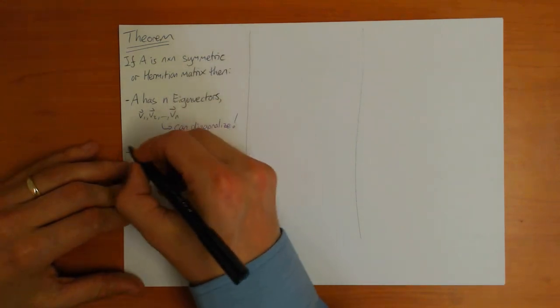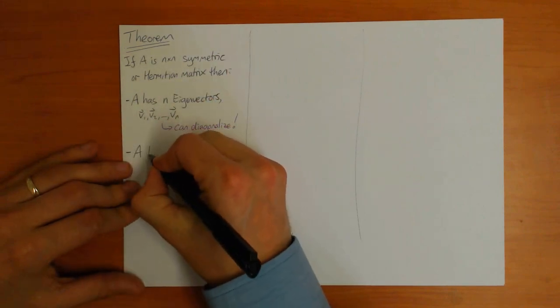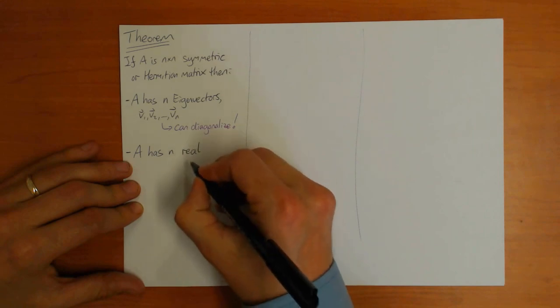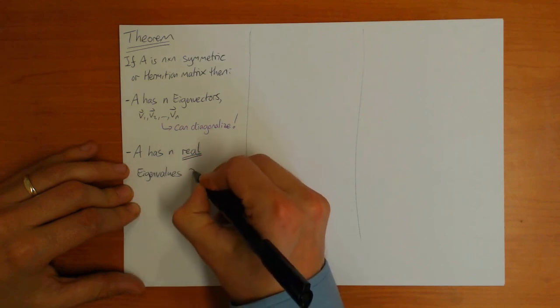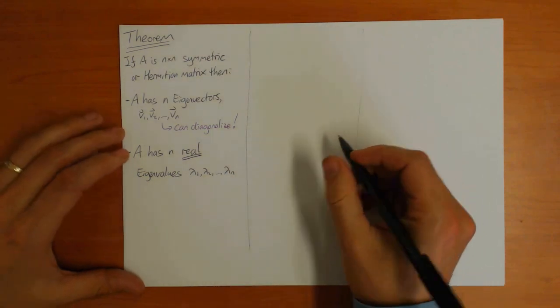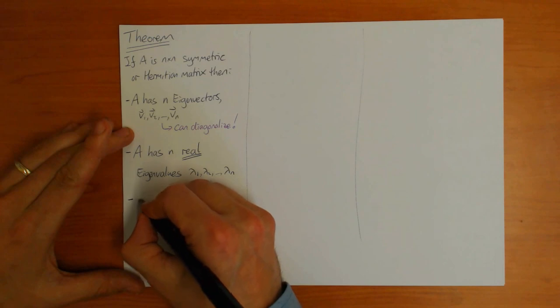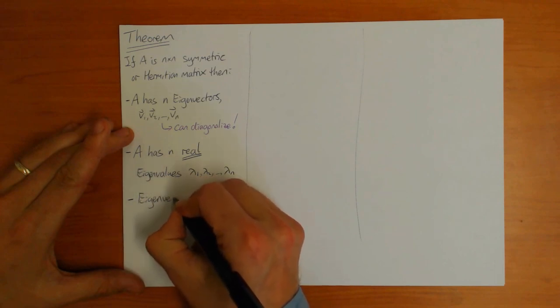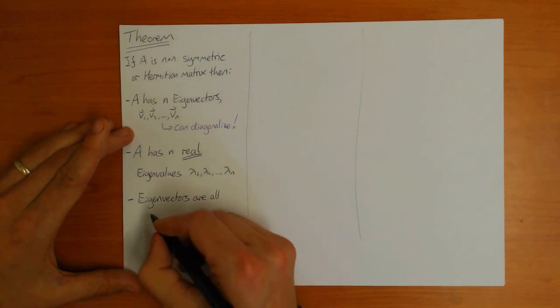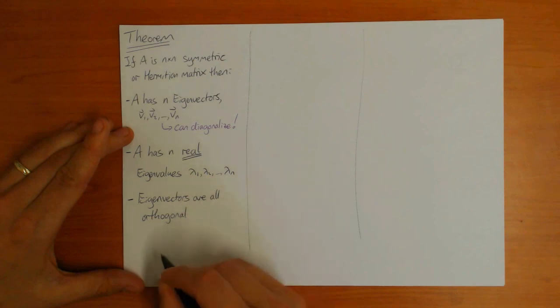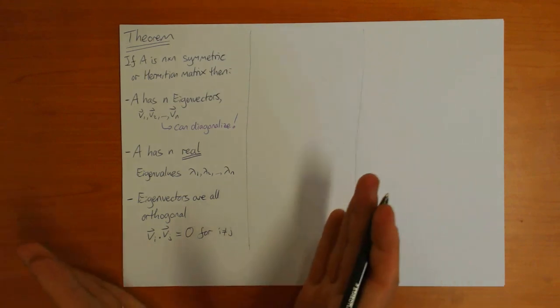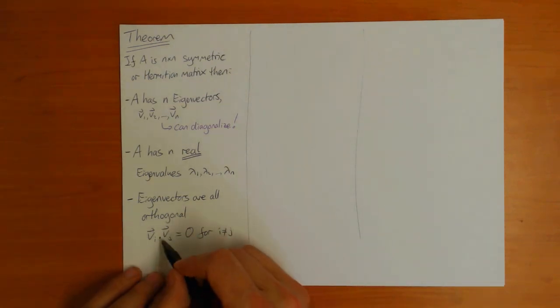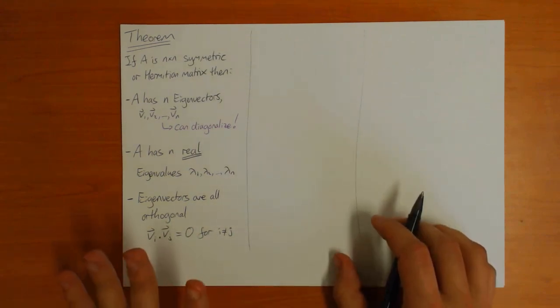The second part is that for these matrices, the eigenvalues are always real. So A will have n real eigenvalues, which I can call as usual lambda 1, lambda 2, up to lambda n, and they are real. The eigenvectors are all orthogonal, which means that Vi dot Vj equals zero if i is not equal to j. For real vectors, this means they're all at 90 degrees to each other, but it also applies for the case where the eigenvectors are complex as well.